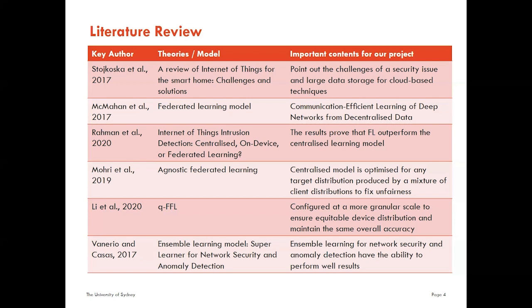Ensemble learning for network security and anomaly detection has the ability to perform well. It combines multiple learning models and achieves better prediction results. Furthermore, an ensemble of models has stronger resilience in the face of training data uncertainty. The ensemble learning concept has a similarity to how Federated Learning aggregates training results, and this opens up an opportunity to incorporate ensemble learning with a Federated Learning model.